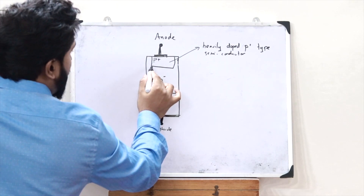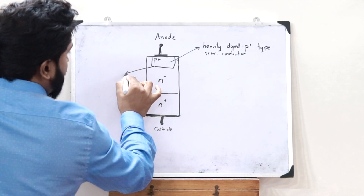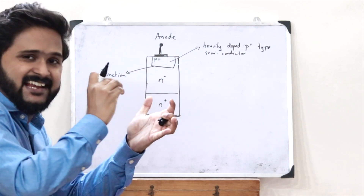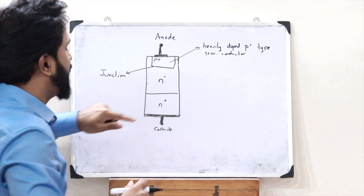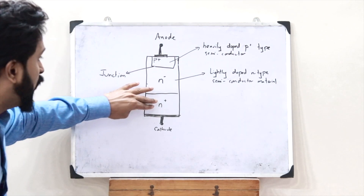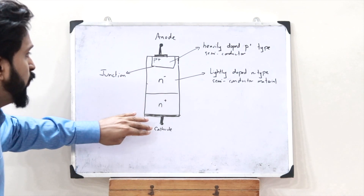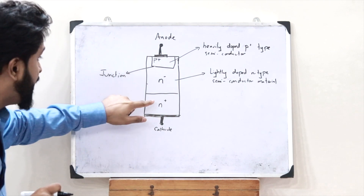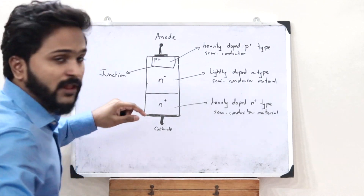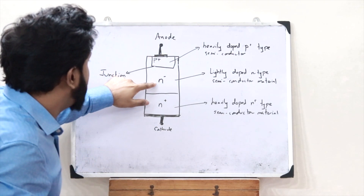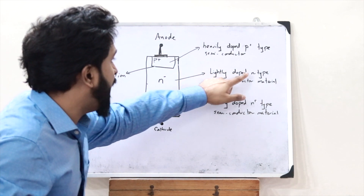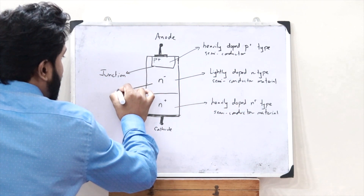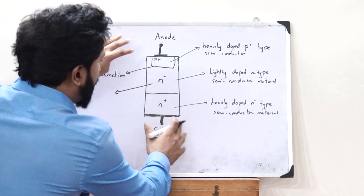A particular junction has been created, and this particular region is made up of a lightly doped N-minus semiconductor material. The lowermost layer which is connected to the cathode is made up of a heavily doped N-plus type of semiconductor material. Therefore, this particular region which has a lightly doped N-type semiconductor material is referred to as the drift space of this particular power diode.